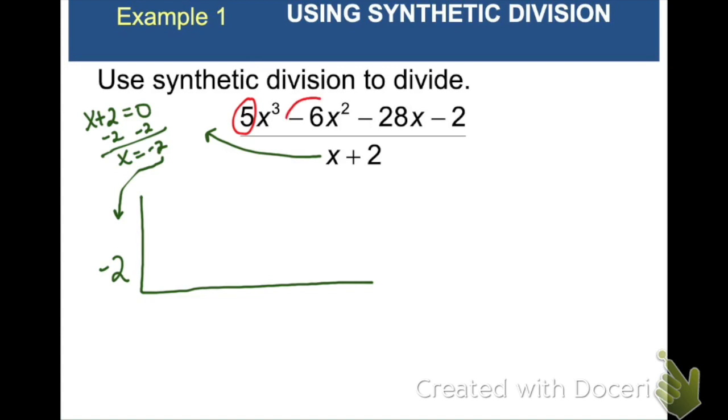Next, we're going to take our coefficients, 5, negative 6, negative 28, and negative 2, and we're going to write them on the top line. Now we're just going to do a series of adding down and multiplying by negative 2, multiple times over and over. So here we go.